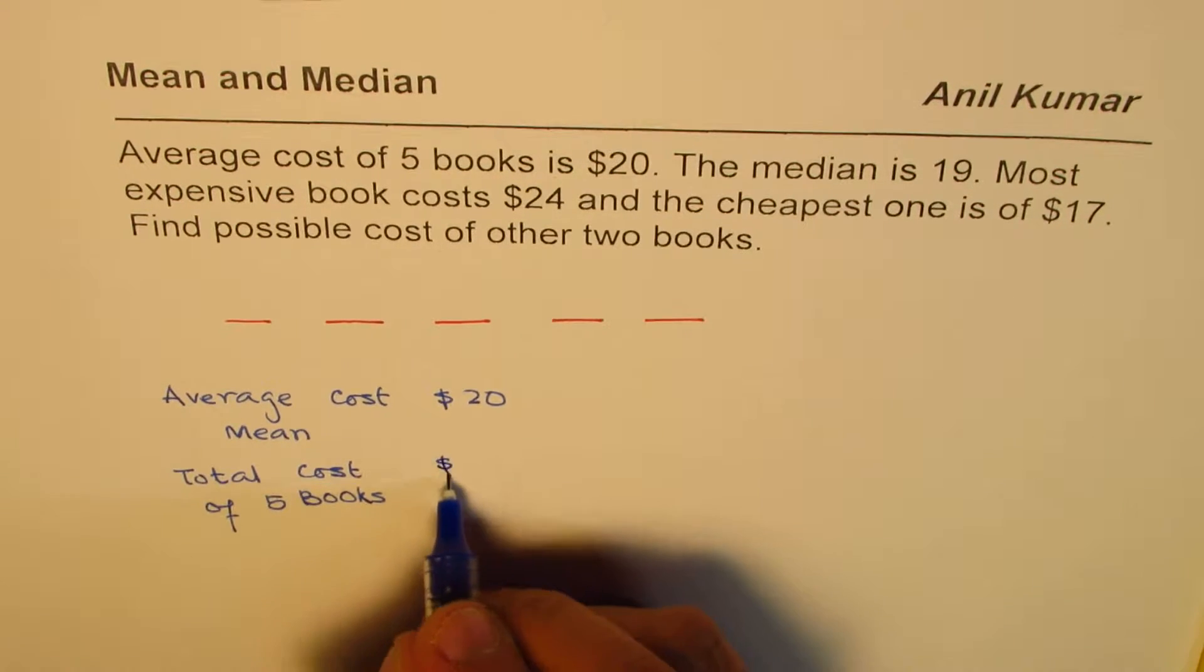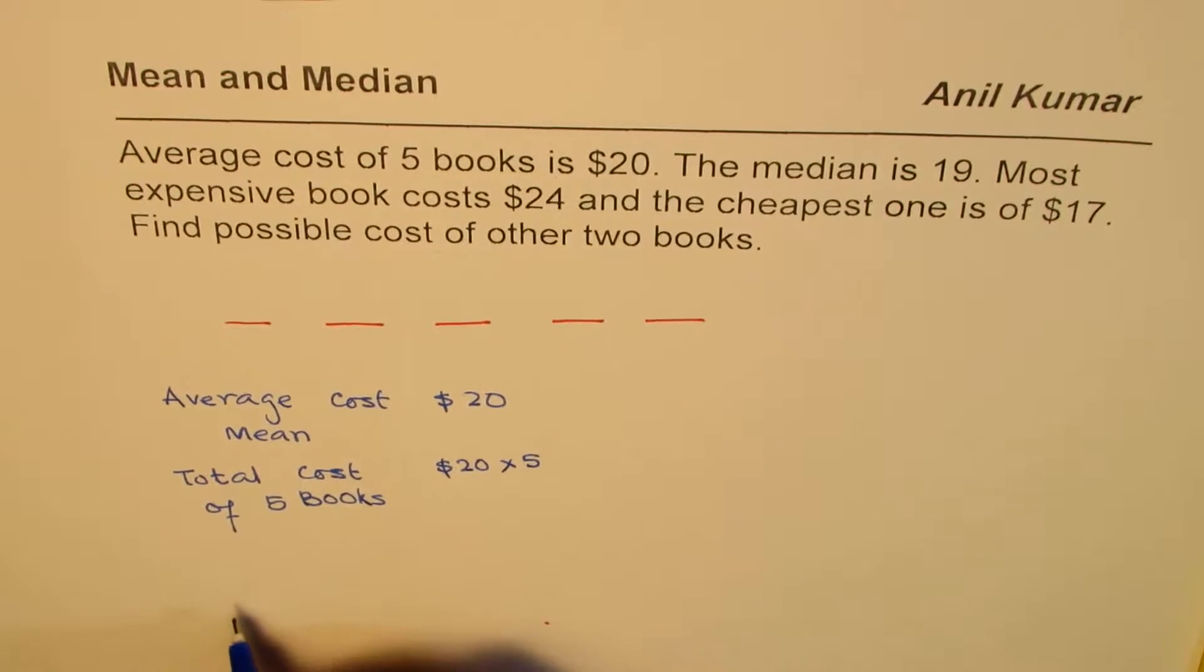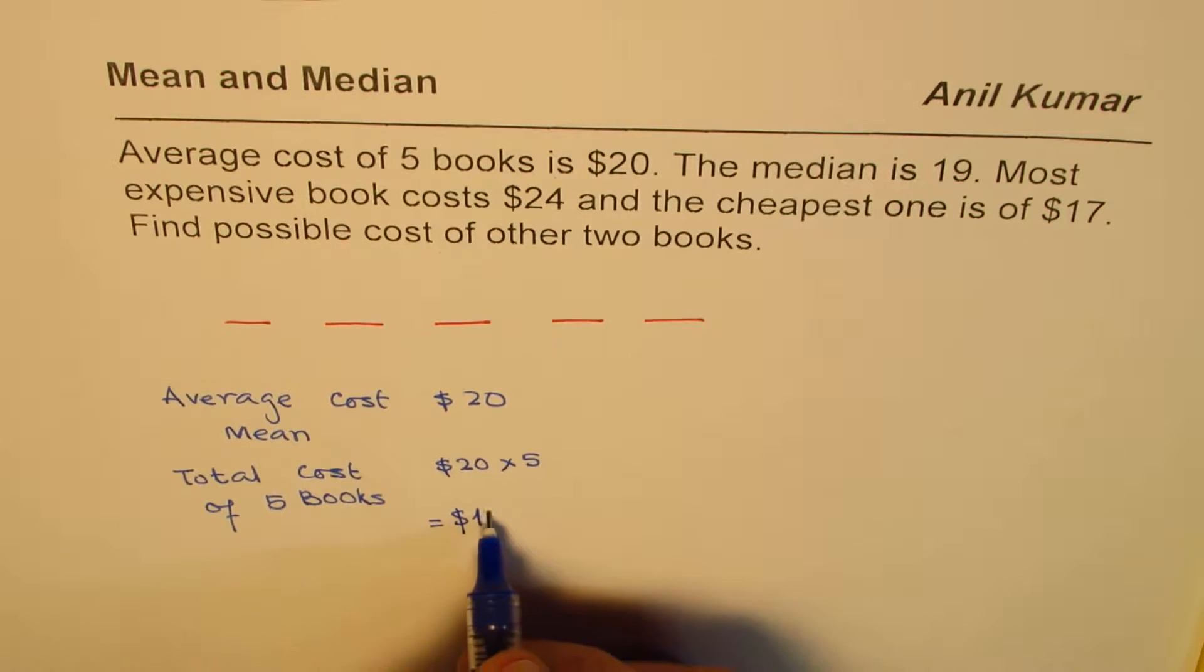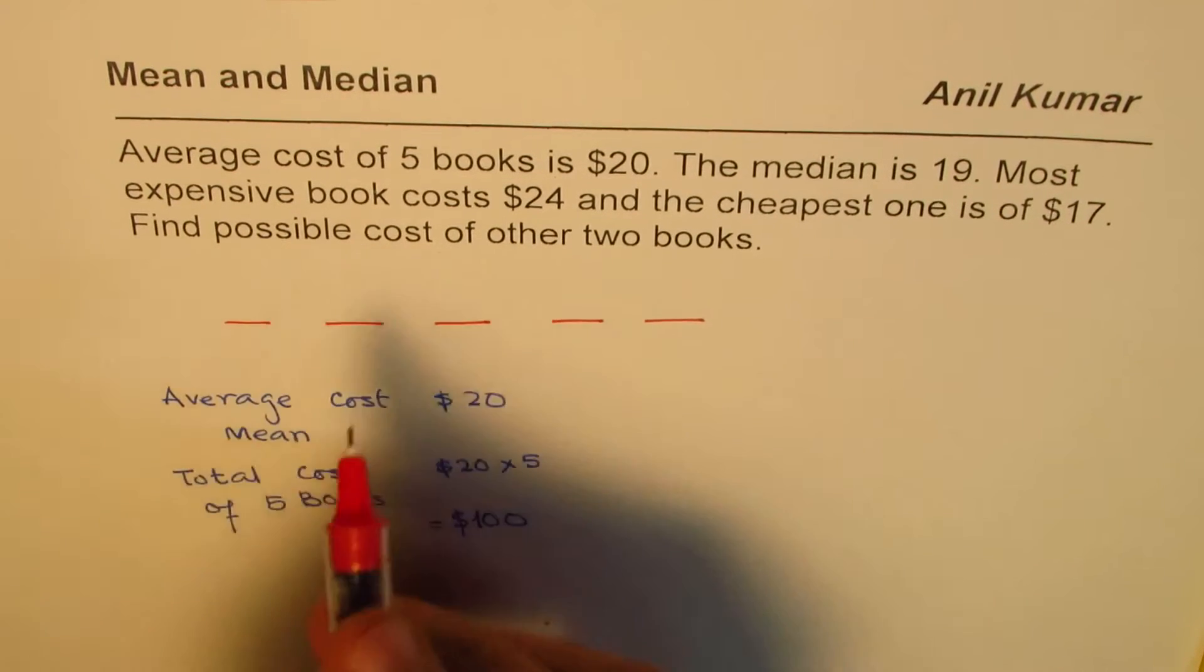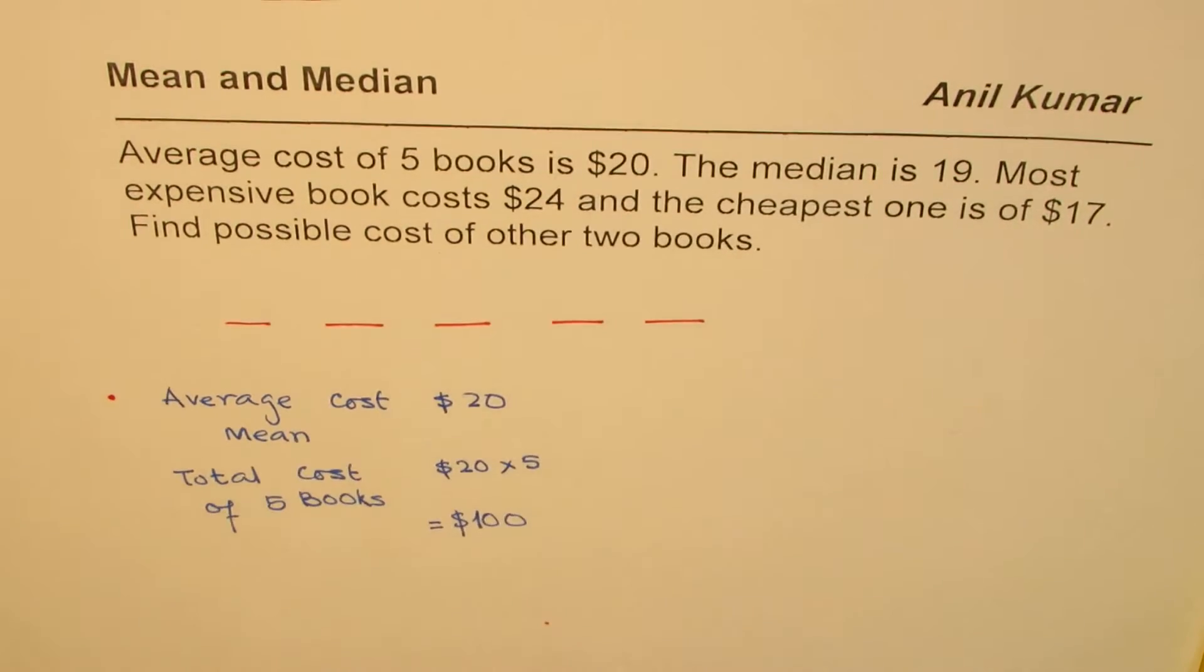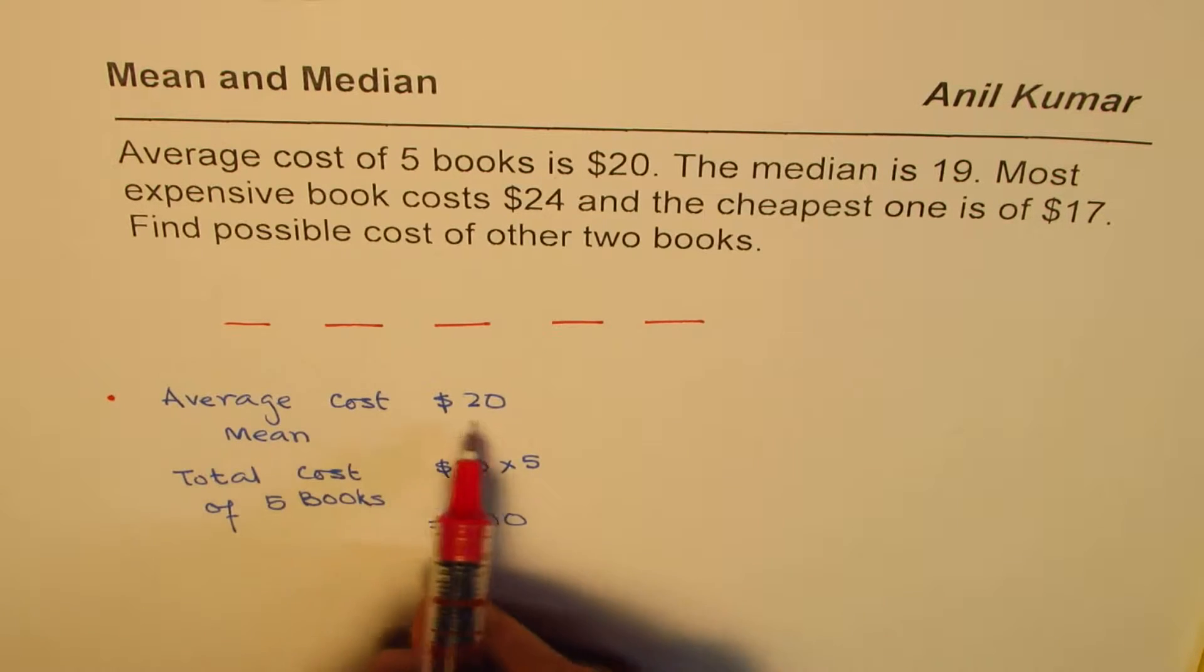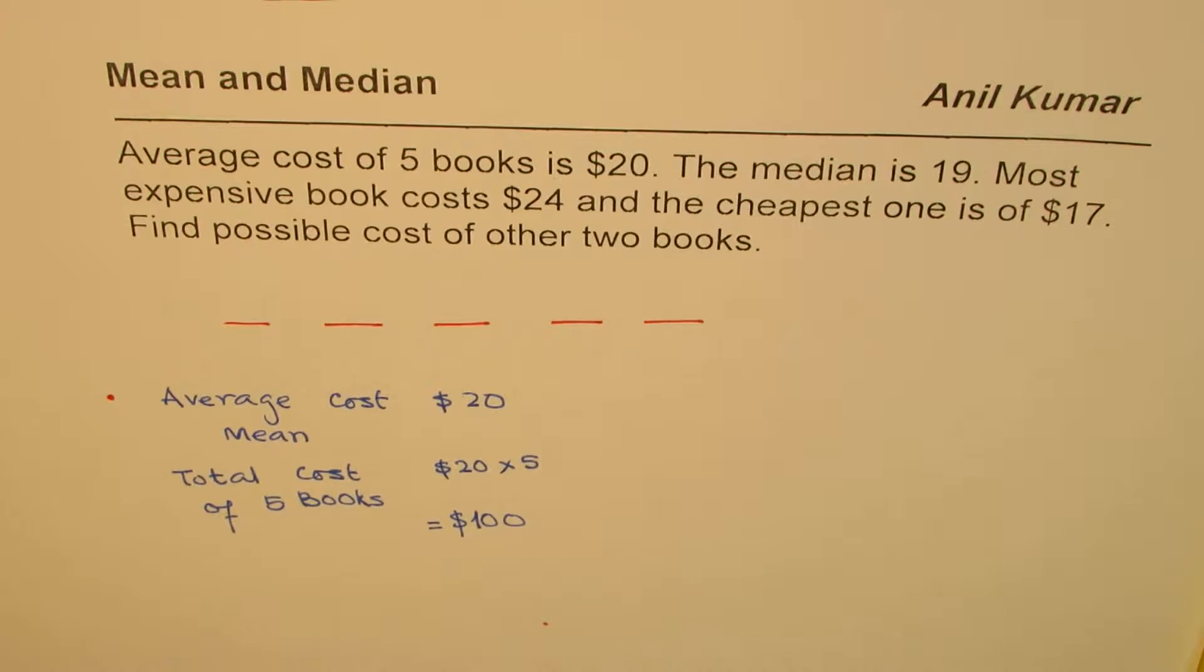Total cost should be $20 times 5, right? Since the average cost is $20, so that gives you a value of $100. So $100 is the total cost. So that is the information which we get from the first sentence. Average cost of 5 books is $20. That means that mean or average cost is $20. Total cost of 5 books should be 5 times 20, which is $100.